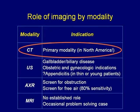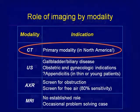Abdominal x-ray is very limited in the acute abdomen setting. It can help look for gross obstruction and theoretically can pick up two cc's of free air, but CT is the gold standard for evaluating the abdomen in the acute setting. MRI has no established role at this point, although we frequently image pregnant patients with MRI and occasionally use it for problem solving.